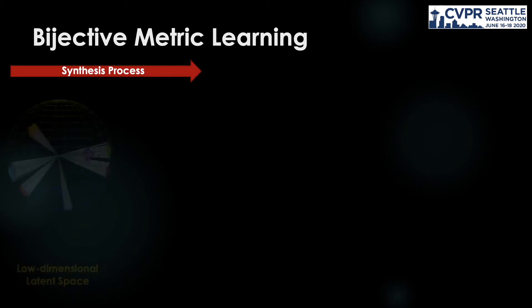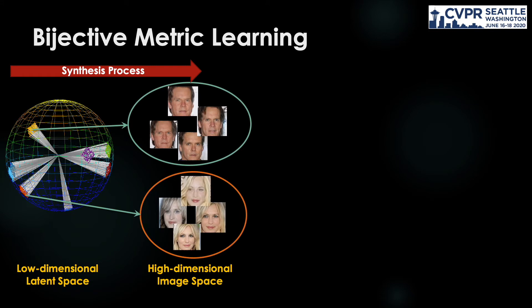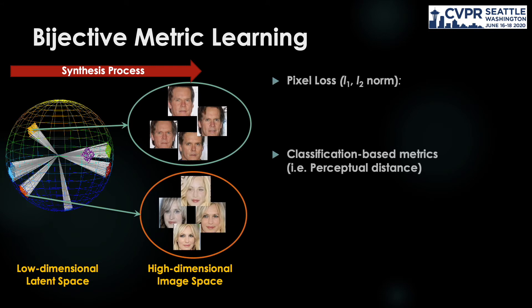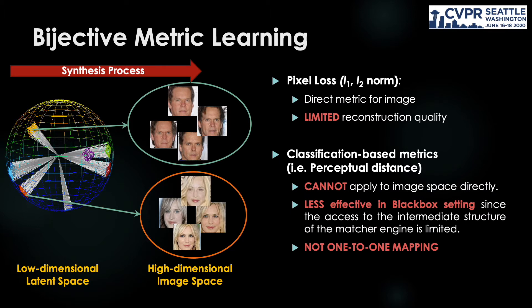In order to synthesize a subject's face from their feature, a straightforward approach is to learn a generator structure to synthesize the face from the input feature representation. Then some metrics such as pixel loss, perceptual loss, or ID preservation loss are applied for the learning process. However, while direct metrics like pixel loss maintain low reconstructed quality, classification-based metrics also meet many limitations, as accessibility to the matcher structure for backpropagation is not available.